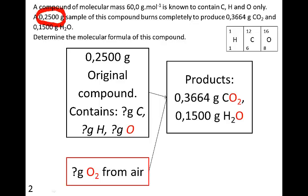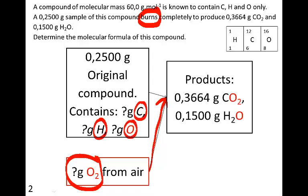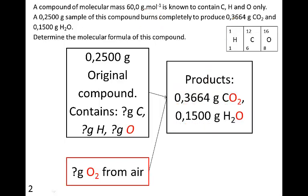The original compound contains certain masses of carbon, hydrogen, and oxygen. If we know these masses, we have a mass ratio which we can convert into a particle ratio to get a simplest formula — the empirical formula. During combustion, oxygen from the air combines with the carbon, hydrogen, and oxygen from the compound to produce carbon dioxide and water. The tricky thing to realize is that not all the oxygen inside the products actually came from the original compound — some of it came from the air, so you have to be careful with that.